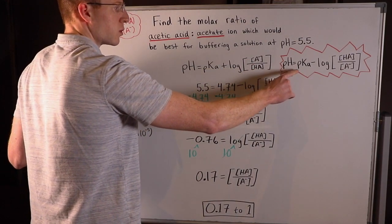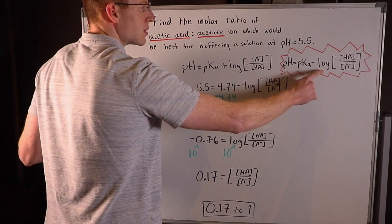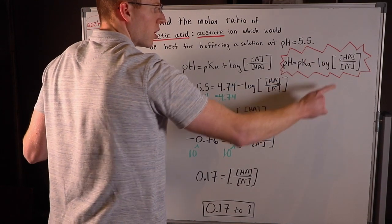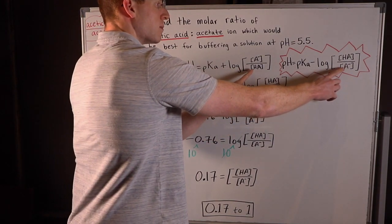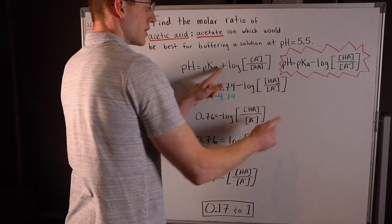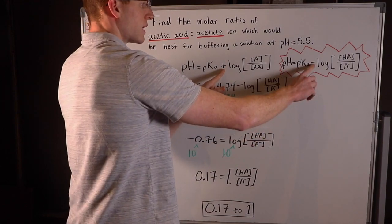Or pH equals pKa minus the log of the acid's concentration over the conjugate base's concentration. So you can see these fractions here become reversed when you change this plus sign into a minus sign.